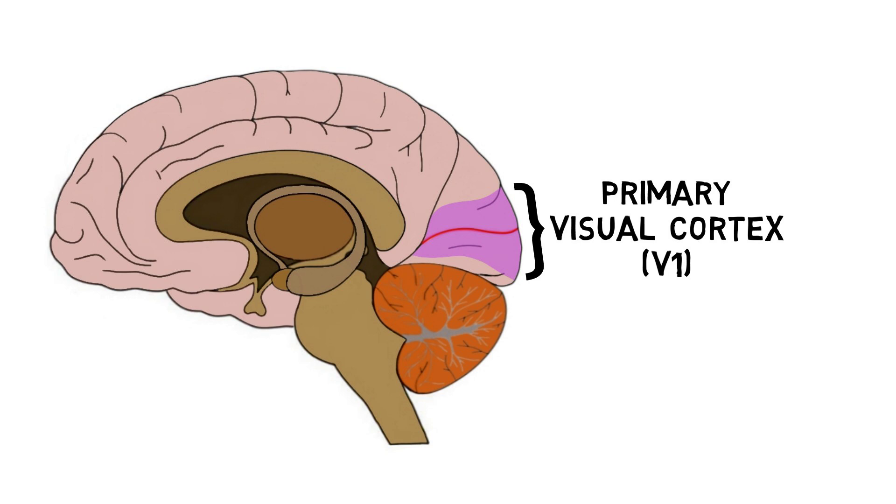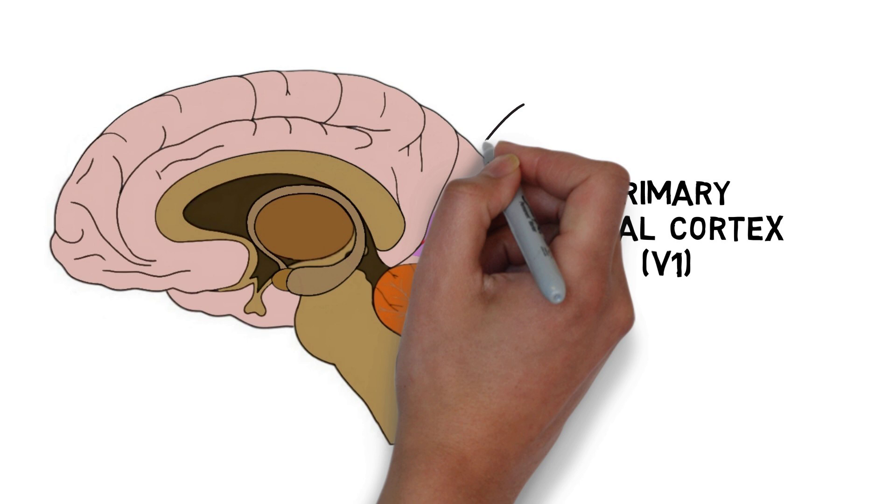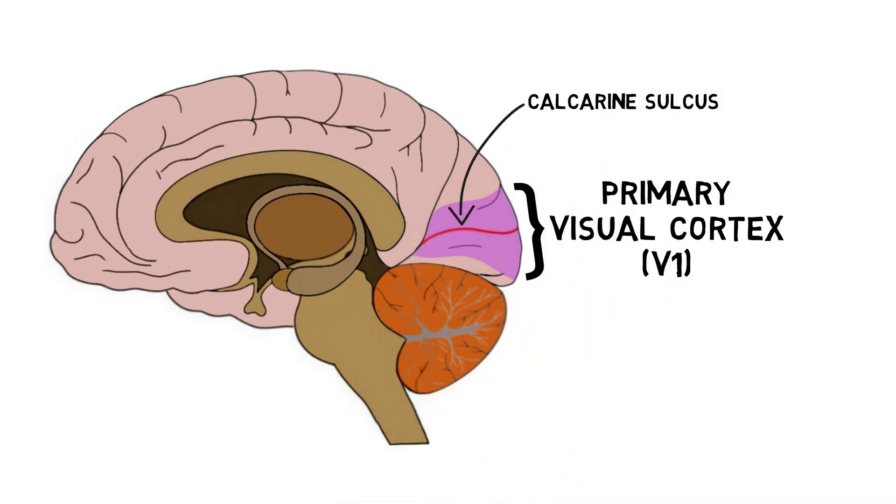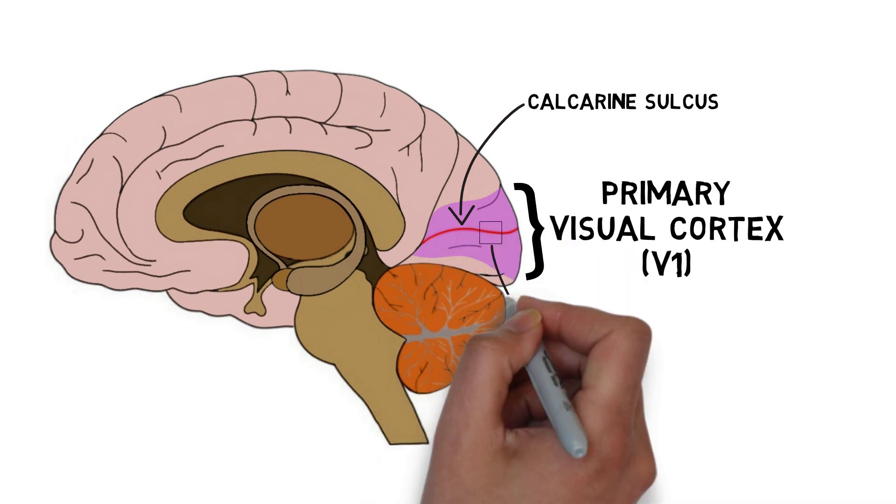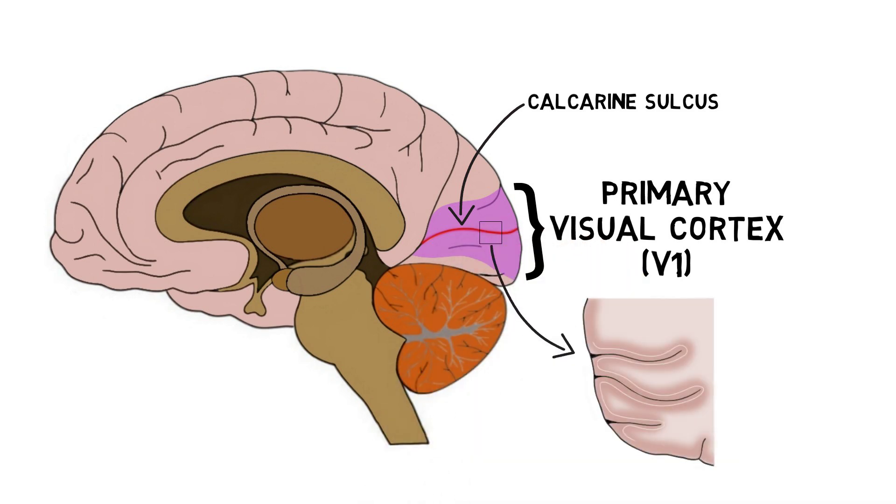It is found in the occipital lobe, surrounding and extending into a sulcus called the calcarine sulcus. A large band of myelinated axons runs along the edges of the calcarine sulcus, giving the primary visual cortex a striped appearance. Because of this, it is sometimes called the striate cortex.